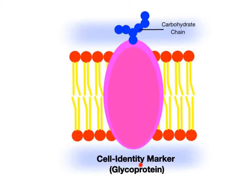Cell identity markers are types of membrane proteins that include the glycoproteins. Glyco refers to the branching chains of carbohydrates that are attached to these proteins. Cell identity markers act as cellular fingerprints scattered across the membrane surface that give the cell its unique identity.